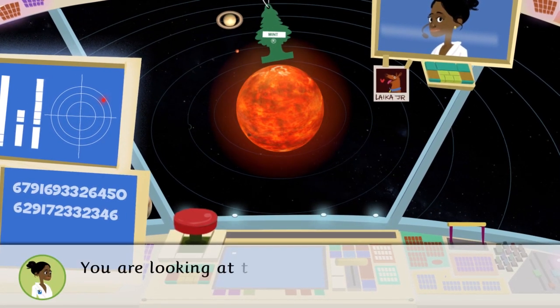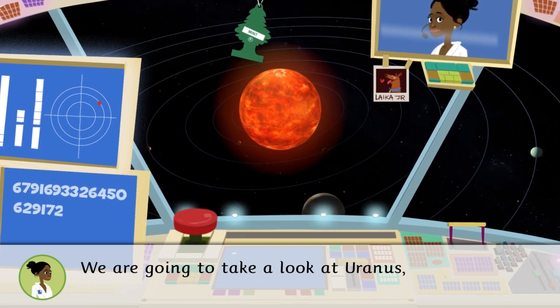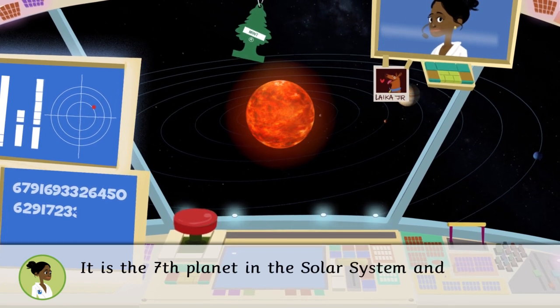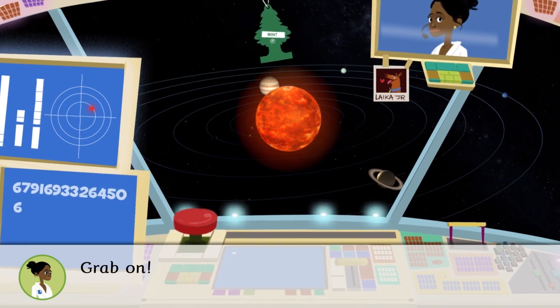You are looking at the solar system. We are going to take a look at Uranus. Do you want to come? It is the seventh planet in the solar system and the first to be discovered by the telescope. Grab on, we're headed that way.